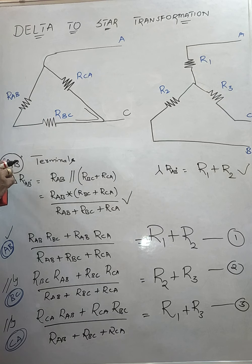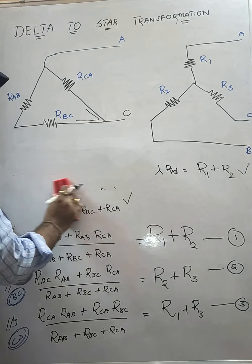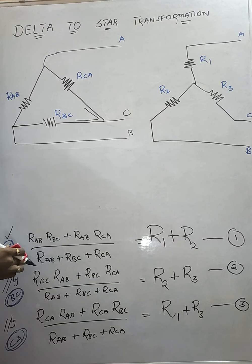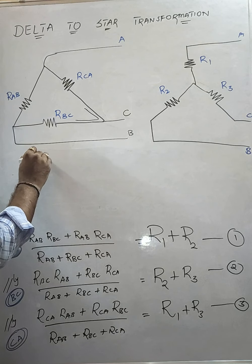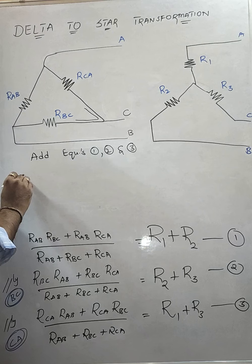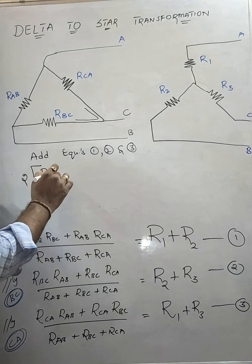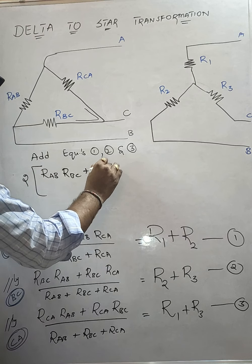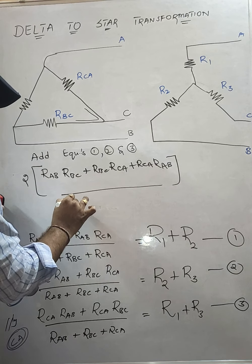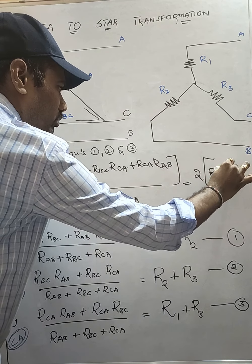That's the simplification part — for each terminal pair we equate the delta-connected value to the star-connected value and get three equations. The next step is to add all three equations: equation 1 plus equation 2 plus equation 3. Adding them, we get: 2 times (R_AB·R_BC + R_BC·R_CA + R_CA·R_AB) divided by (R_AB + R_BC + R_CA) equals 2 times (R1 plus R2 plus R3). This is our main equation.